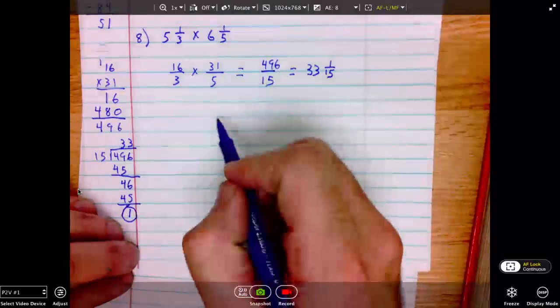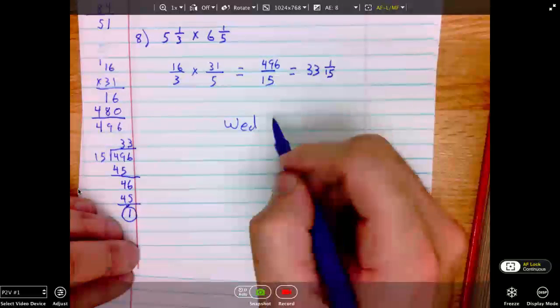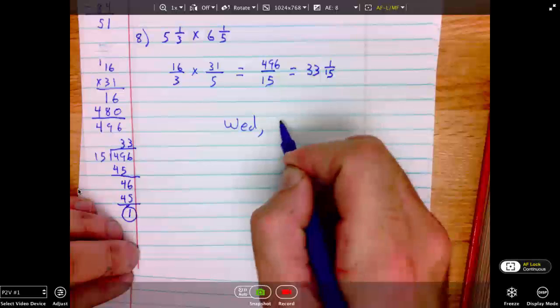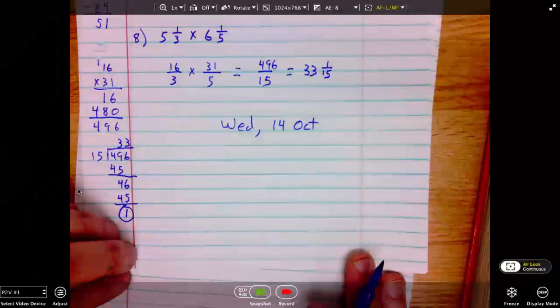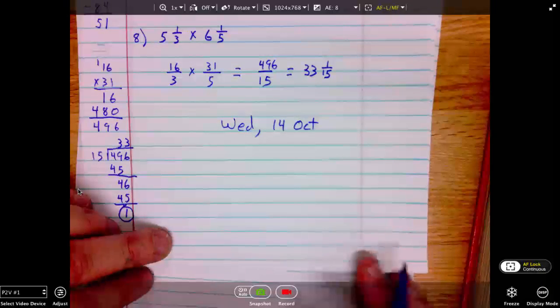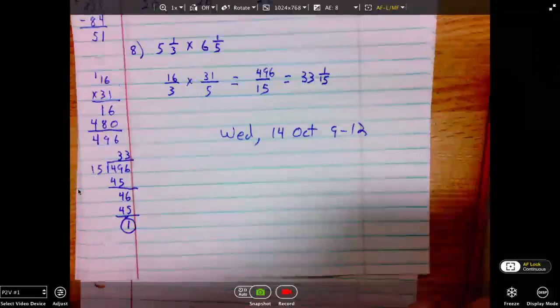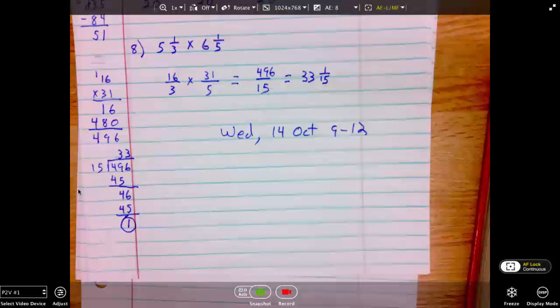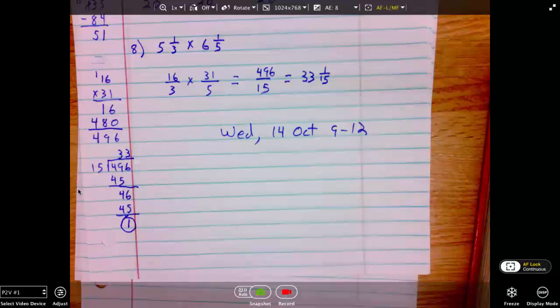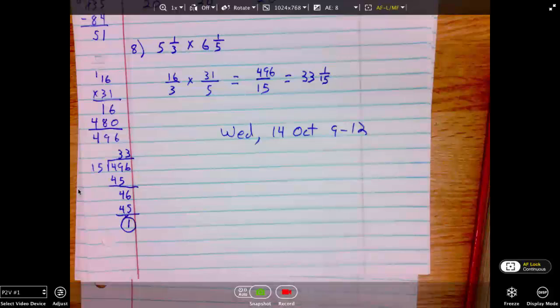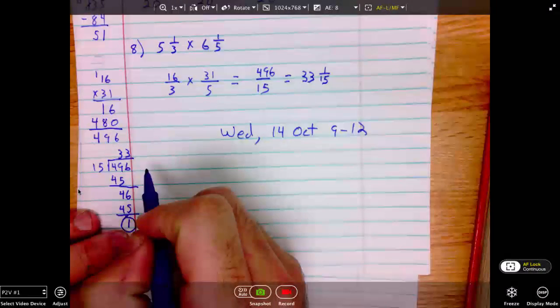Next, we will be looking at Wednesday. Wednesday will be the 14th of October. For Wednesday, we will be looking at problems 9 through 12. In 9 through 12, we have three additions and one division. I'm going to do the first addition problem. Number 9.